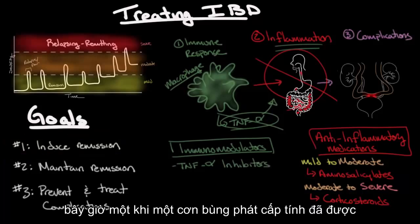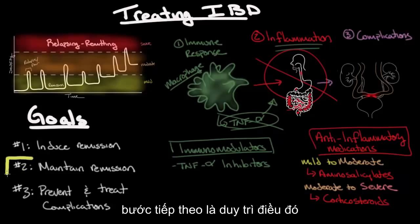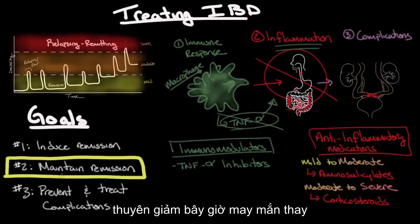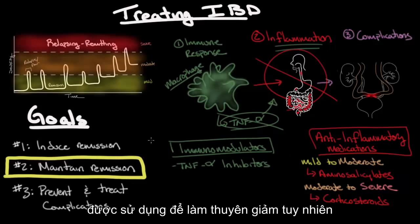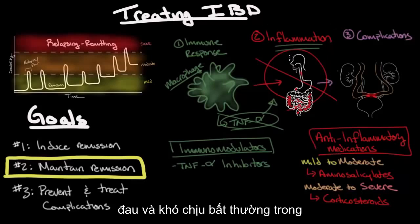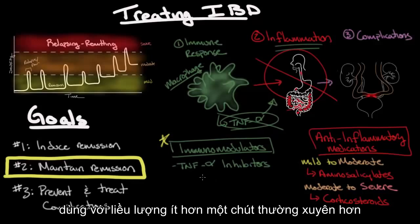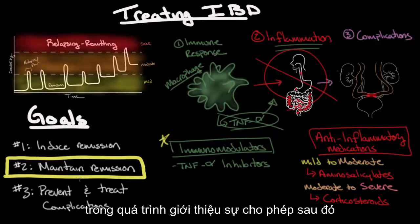Once an acute flare has been overcome and the medications for inducing remission have been successful, the next step is to maintain that remission. Fortunately, the medications used to maintain remission are largely the same as those used to induce remission. However, during induction, anti-inflammatories are the primary focus because it's the inflammation causing pain and discomfort. During the maintenance phase, immunomodulators are a little more emphasized, though often taken at slightly lower doses than during induction.